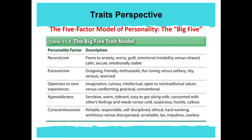Neuroticism pertains to emotional instability, which is linked to lower grades in school. Conscientiousness, on the other hand, is associated with higher grades and stronger performance motivation, because you set your goals and pursue them. Characteristics include being reliable, responsible, self-disciplined, ethical, hardworking, and ambitious — versus being disorganized, unreliable, lax, impulsive, or careless. According to studies, people who are conscientious tend to live longer.